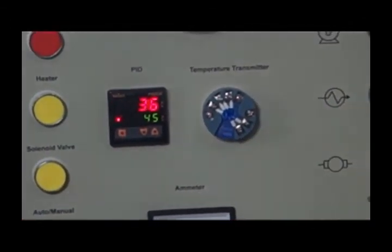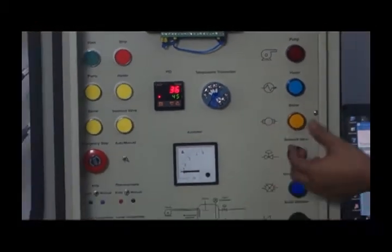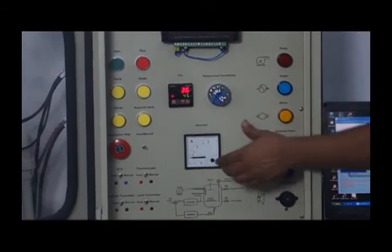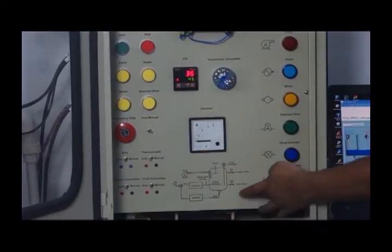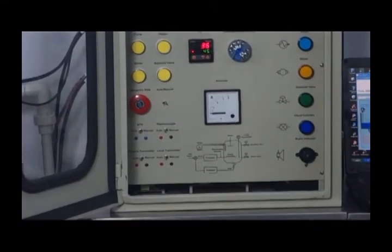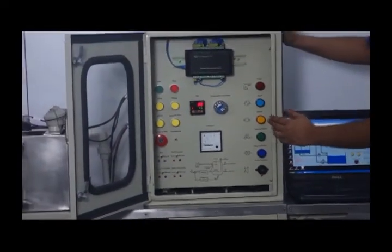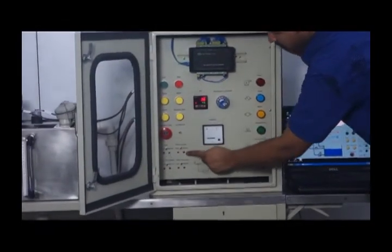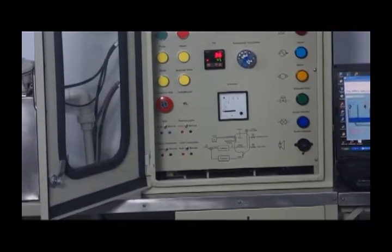There is one temperature transmitter. Output indicators are given. An analog ammeter shows how much current your heater is taking. One process is shown. If you want to measure your output of RTD, level sensor, or thermocouple, points are given where you can place your multimeter and measure manually.